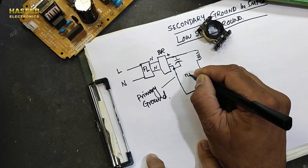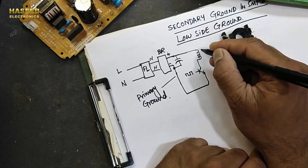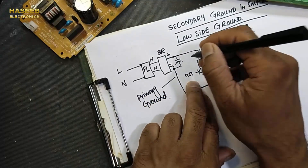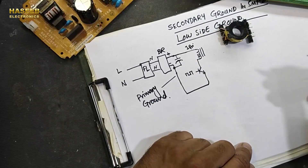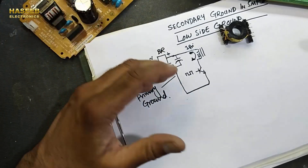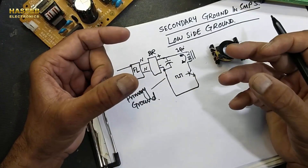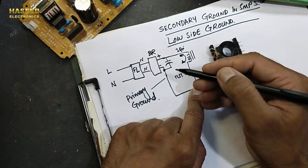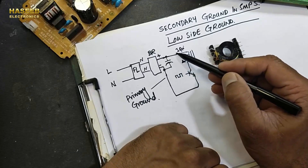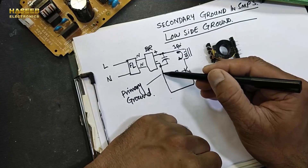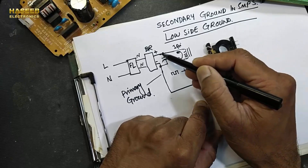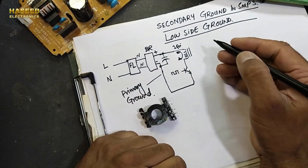The transformer is connected to a switching device — MOSFET, IGBT, or transistor. We have a drive network called the SMPS controller. The primary current IP flows in the primary winding, generating a magnetic field. When current flows in a conductor, it generates a magnetic field. The current flows through only one path: through the switching transistor to the primary, completing its path there.